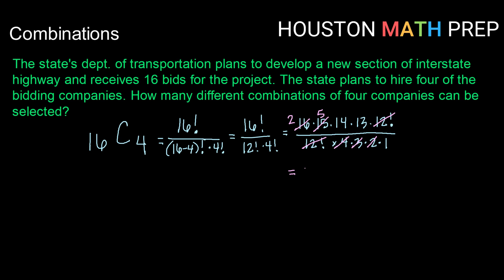So now what I have in my numerator is 2 times 5 times 14 times 13 all over 1.